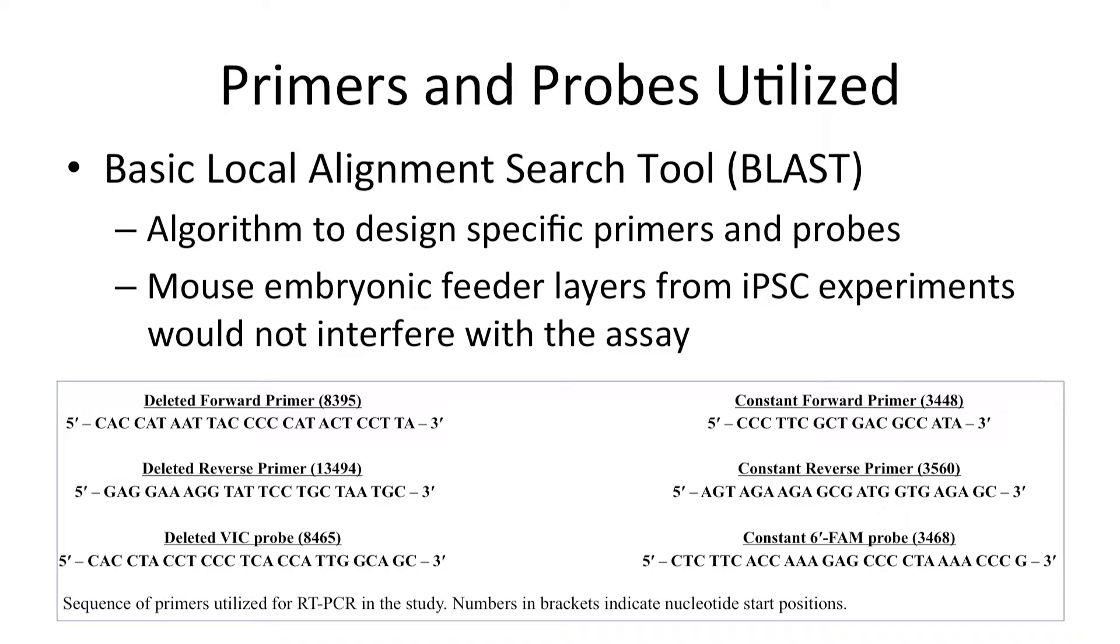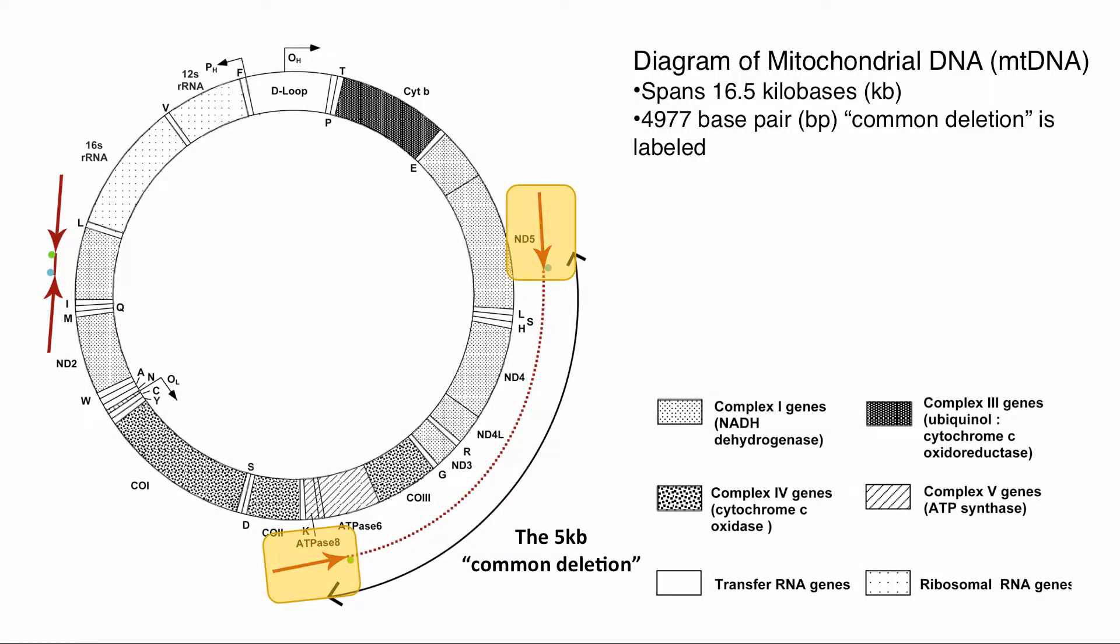Primers and probes are designed using Primer Blast technology to amplify two regions of the mitochondrial genome. One set of primers and probes are far apart, and therefore only amplify in molecules containing the common deletion.